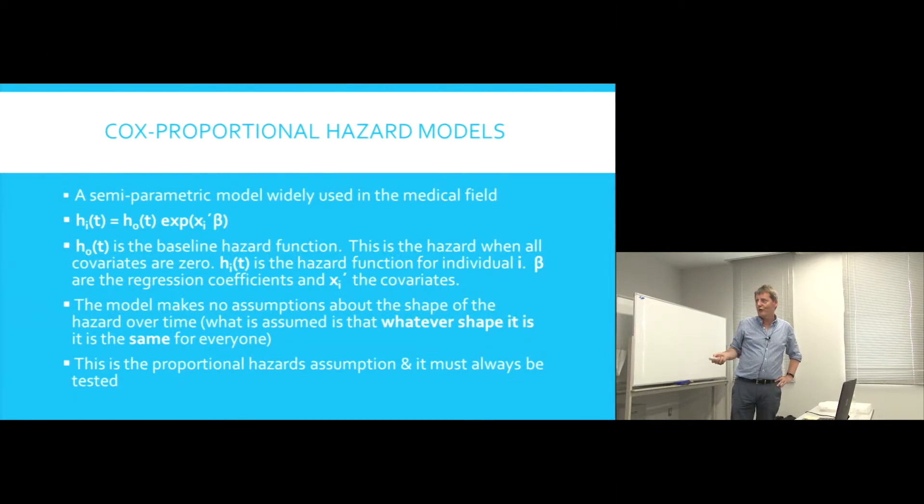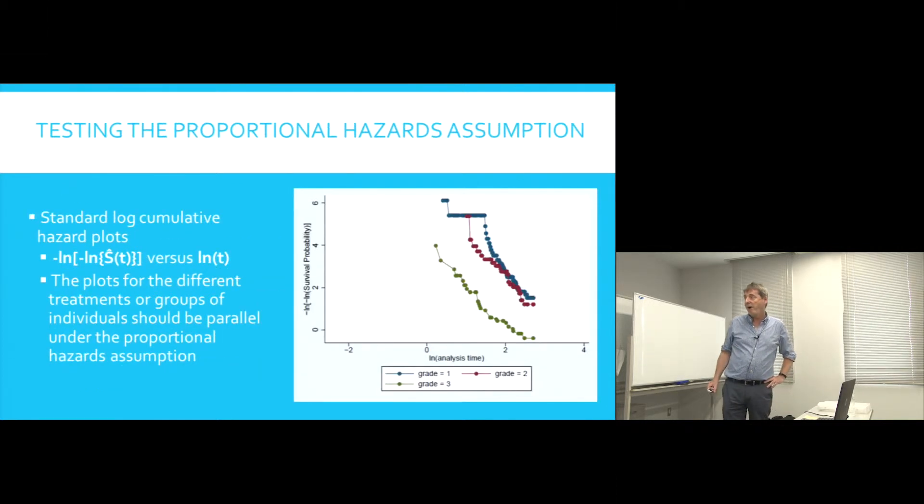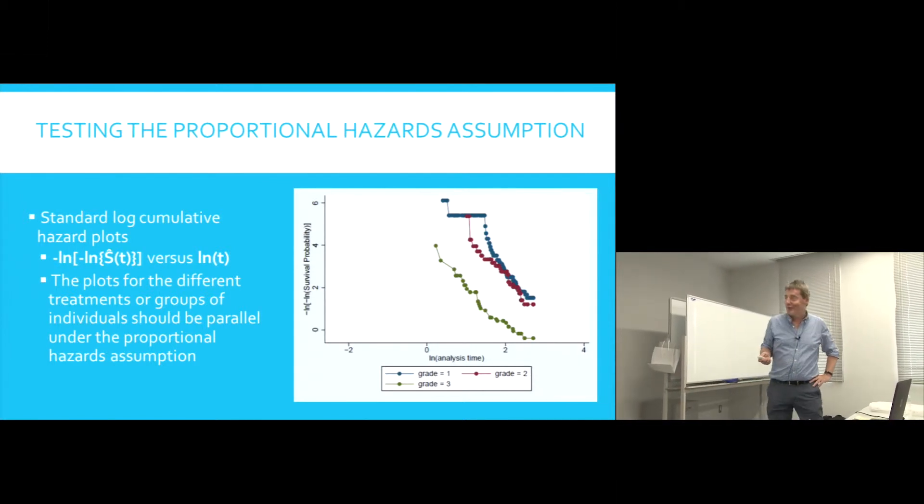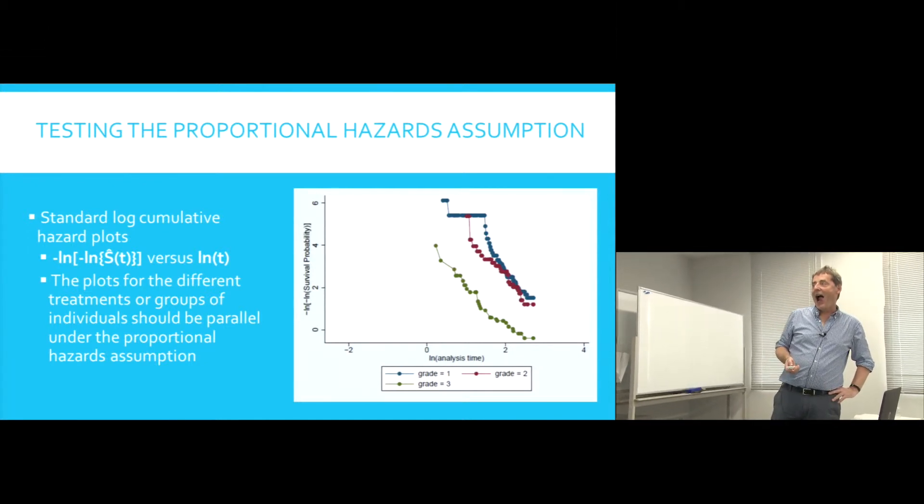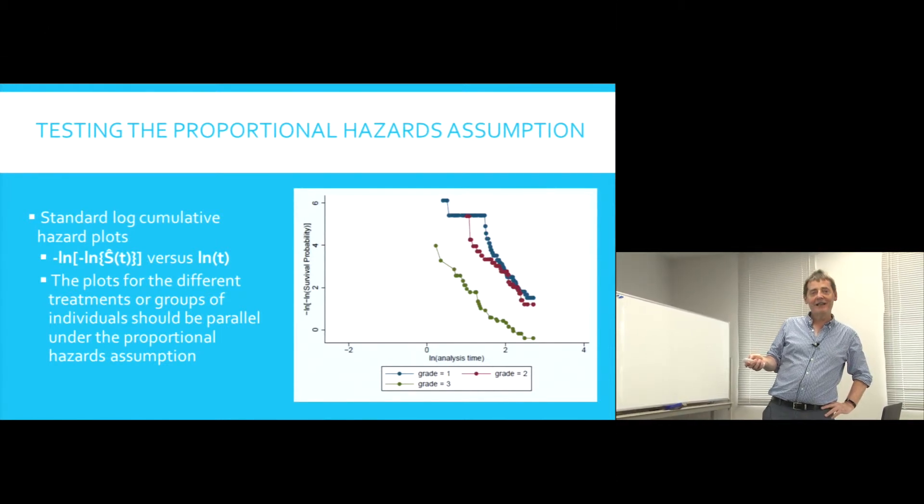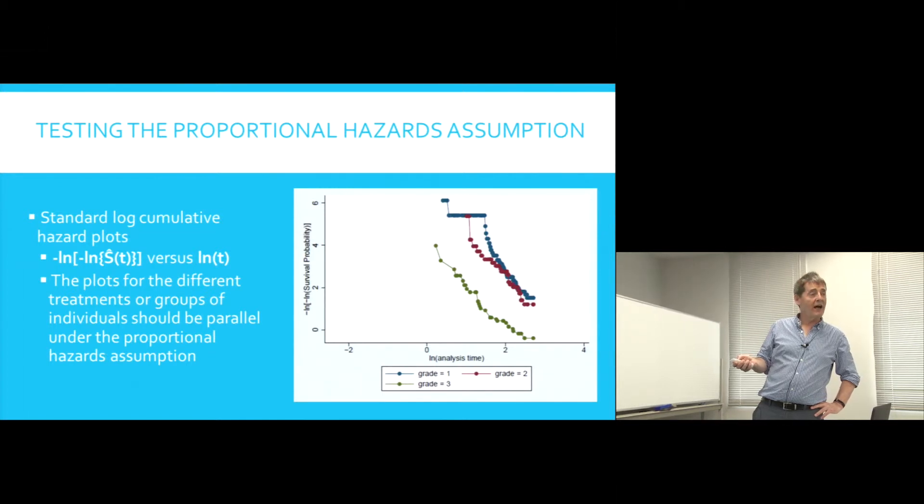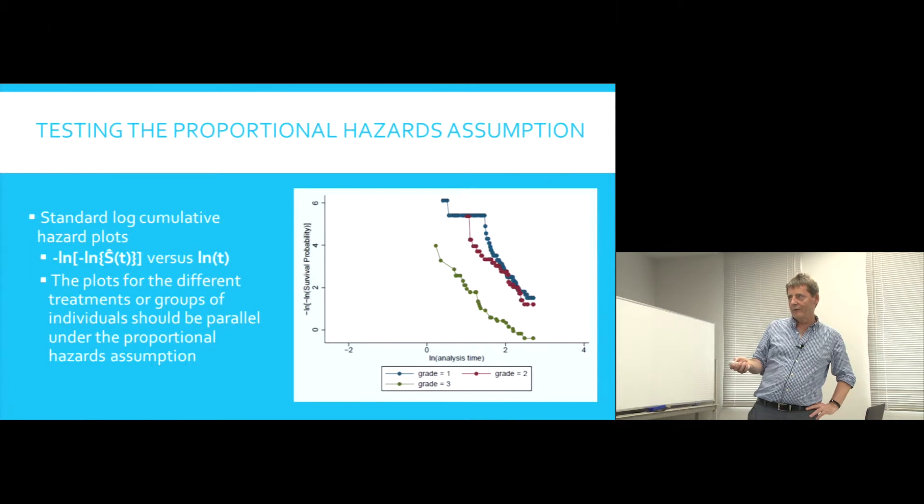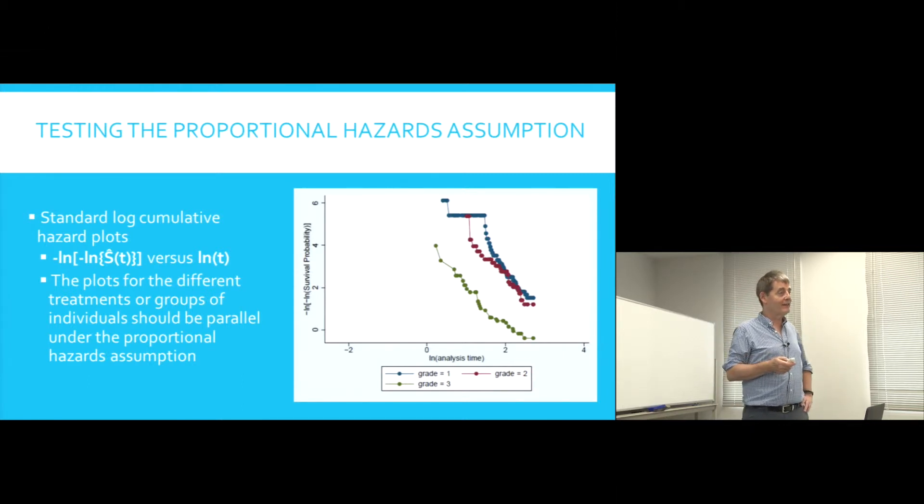So it's important that the proportional hazards assumption is tested and frequently it's not tested. It's not too difficult to test, but it does involve more equations. So the logarithm of the survival function is plotted against the logarithm of time. And if the proportional hazards is met, the curves for different groups should be parallel.